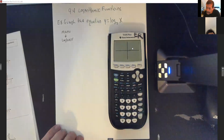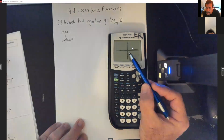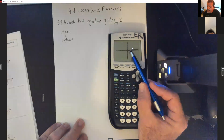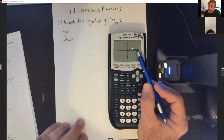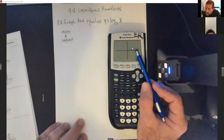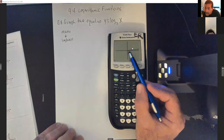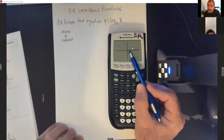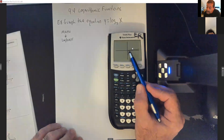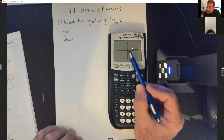Notice these graphs hug the y-axis and then come up and slowly rise, because remember these logarithms are finding exponents — that's why it's flatter going across. It crosses at (1, 0) on the x-axis because for this to equal 1, that exponent has to be zero. So exponentials cross at (0, 1) on the y-axis; logarithms cross at (1, 0) on the x-axis, always.